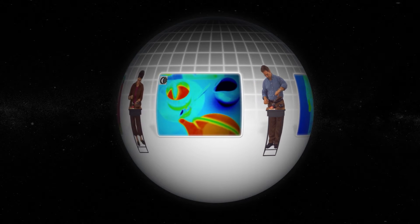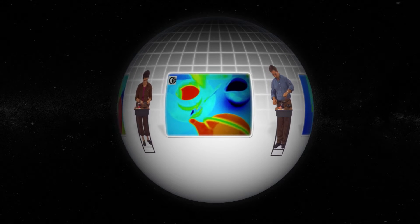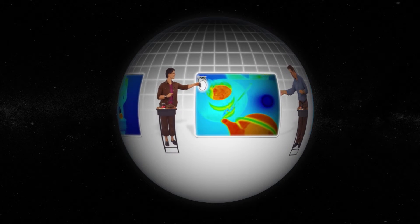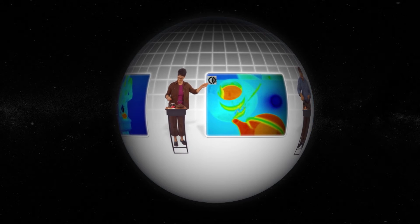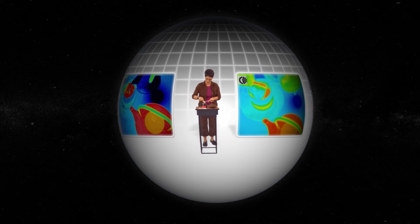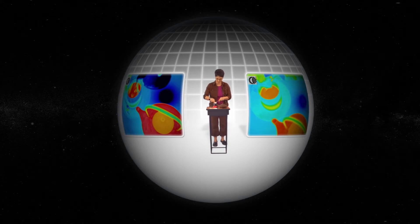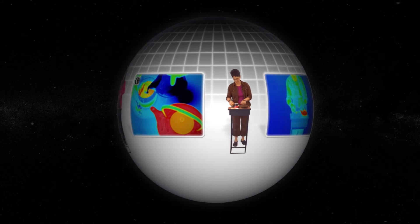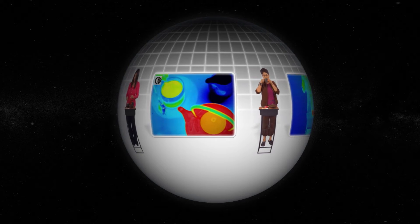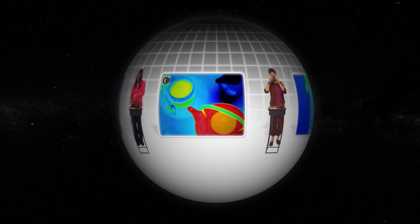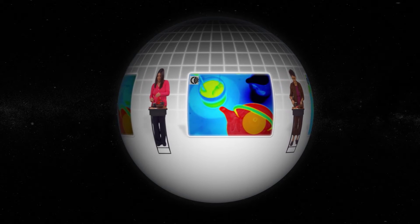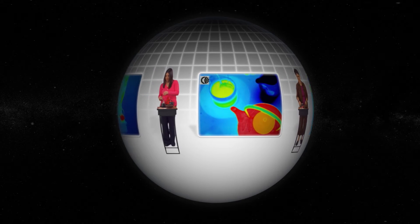Water, ice and vapor. Water exists as a liquid, solid or gas depending on temperature. One way to measure temperature is by looking at the infrared light it emits — light outside the range that's visible to the human eye.